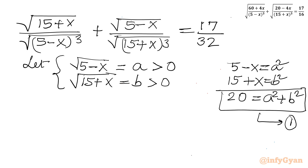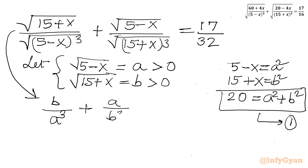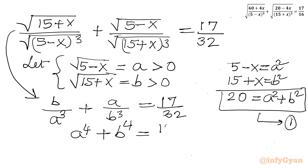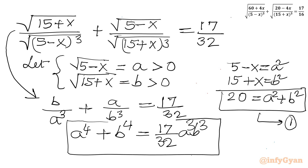Let us apply this substitution. So what I will get: I will write b over a cubed plus a over b cubed equal to 17 over 32. After taking LCM: a to the power 4 plus b to the power 4, divided by a cubed b cubed, will be equal to 17 over 32. I will call this equation number 2.